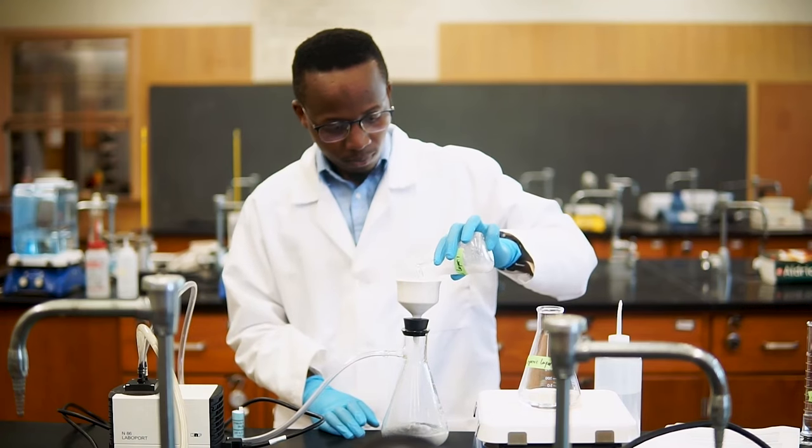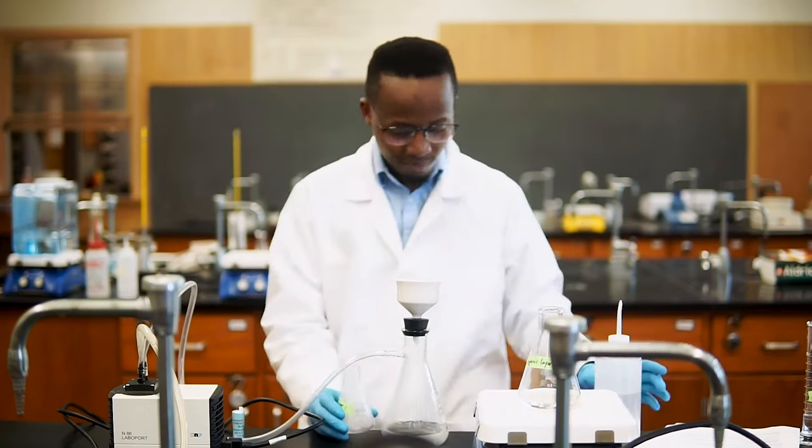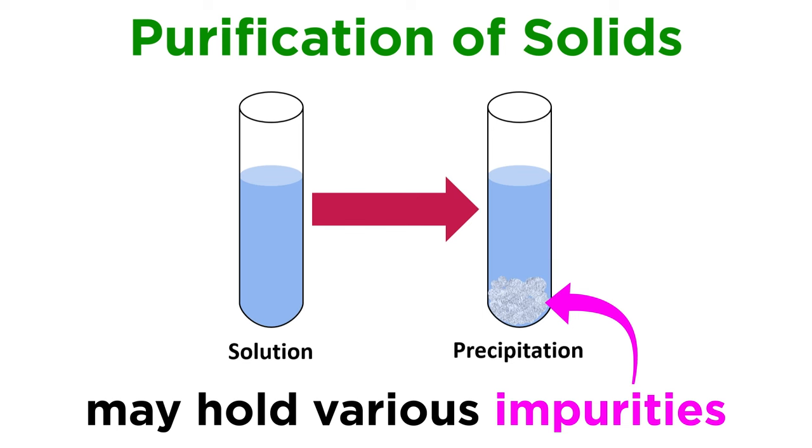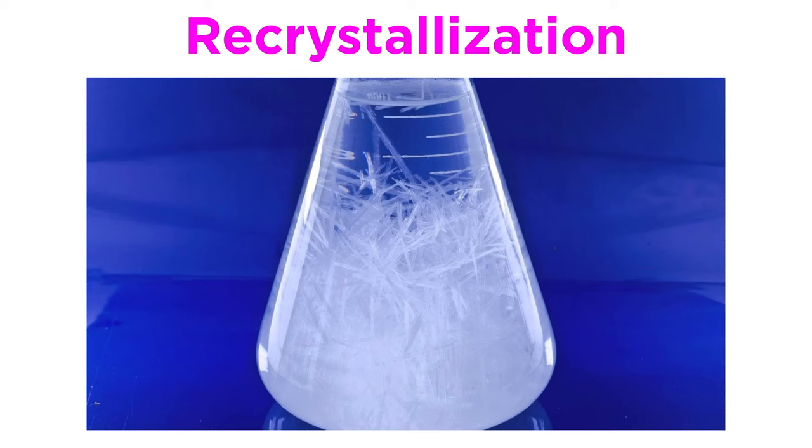We then separated this precipitate from the rest of the solution by using vacuum filtration. However, we did not discuss the fact that when a solid precipitates, it may incorporate a number of impurities from solution into the lattice structure. In order to separate the product from these impurities, or to purify the solid, we will perform something called recrystallization.